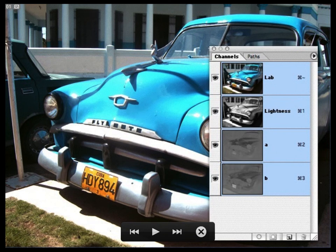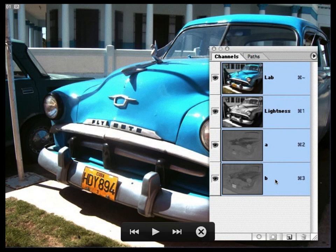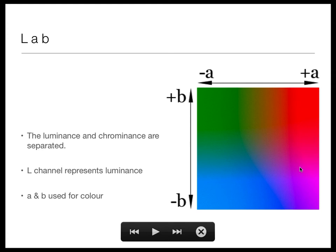The lightness component carries much more of the valuable, detailed information, while the a and b channels don't have as much to offer. To recap: the a and b values can be negative and positive. Over here a is high and b is high; here a is high and b is low; here both are very low; and here a is very low and b is high. You can pick out your color on this scale — yellow is kind of in here, and pretty much all colors are represented.